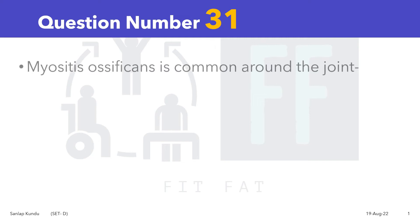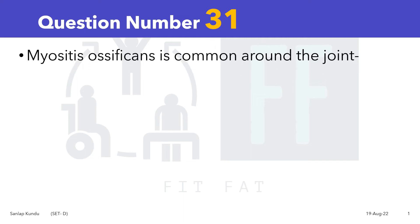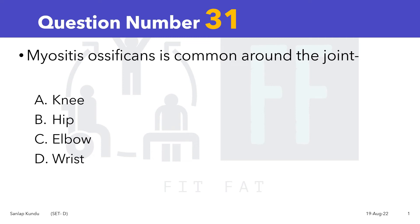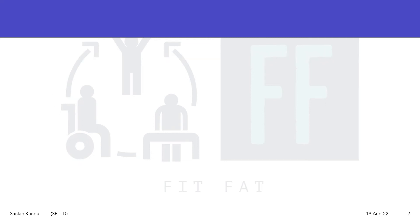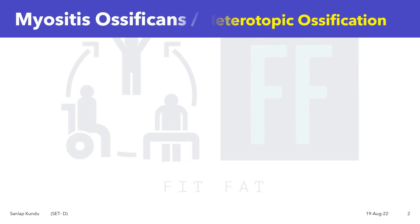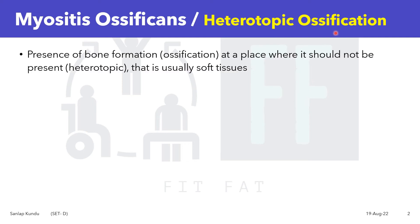Question number 31: myositis ossificans is common around which joint — knee, hip, elbow, or wrist? Myositis ossificans, or heterotopic ossification, as the name suggests: ossification means bone formation, and heterotopic means at a place where it should not be present. In heterotopic ossification, the common area of bone formation is usually at the soft tissues.